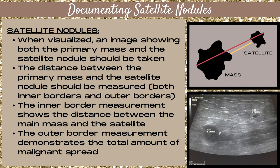You need to measure the distance between them — both the inner borders and the outer borders, as shown on the top image of this slide. The inner border measurement shows the distance between the main mass and the satellite mass, and the outer border measurement demonstrates the total amount of malignant spread. This should be done for each satellite mass that you encounter.